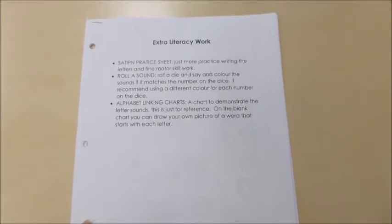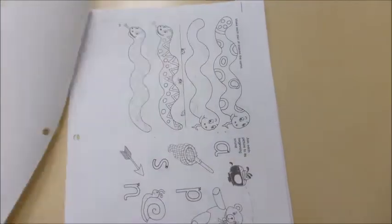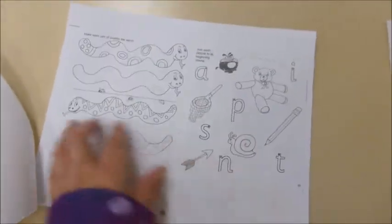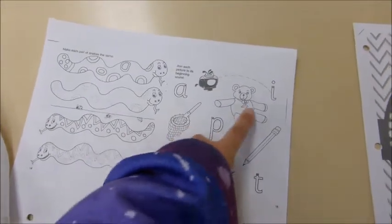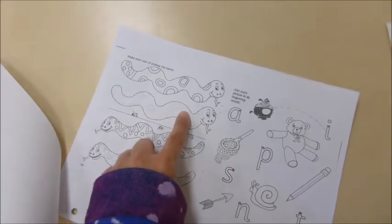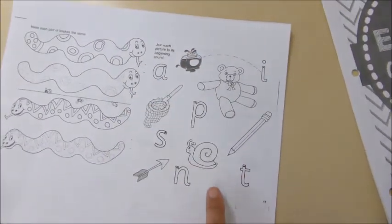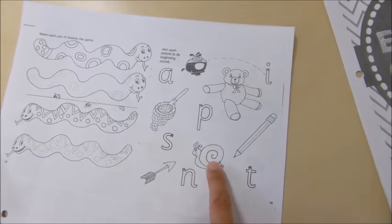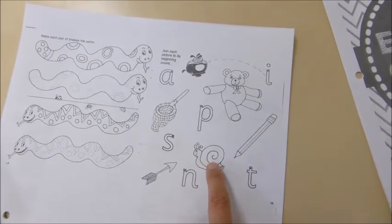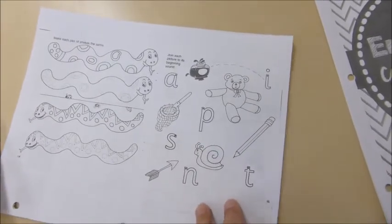Alright friends, here's some extra literacy work — you don't have to do any of this, but it's here for you. Here's a practice SAP ITN sheet, so we've got to color in the snake so that it looks like the top snake. And then here we have to join the picture — so I have 'snail,' and what letter does snail start with? It starts with that, so then you draw and join it together.